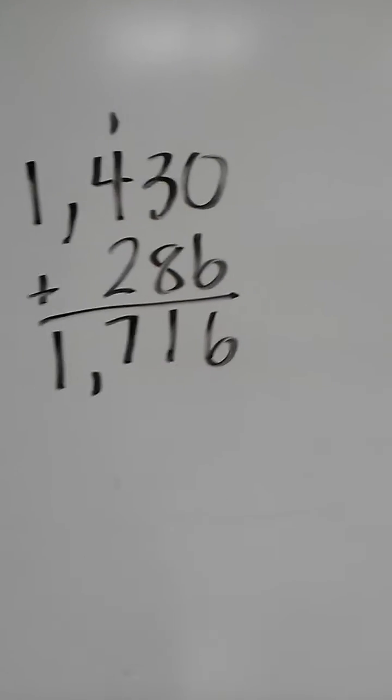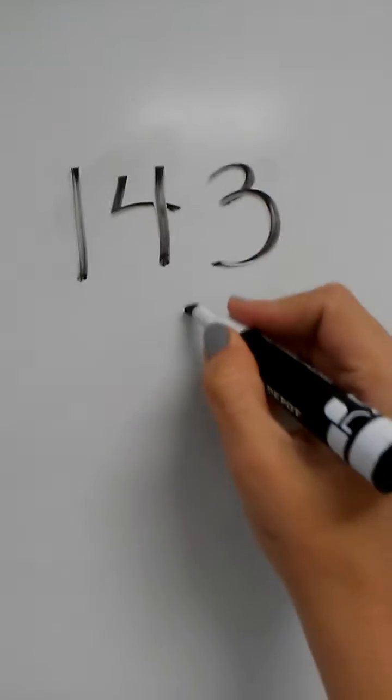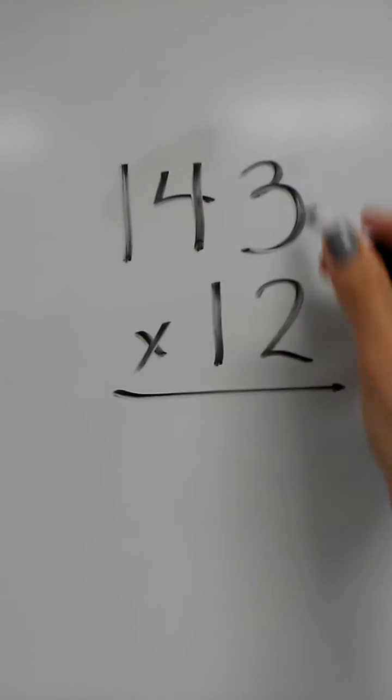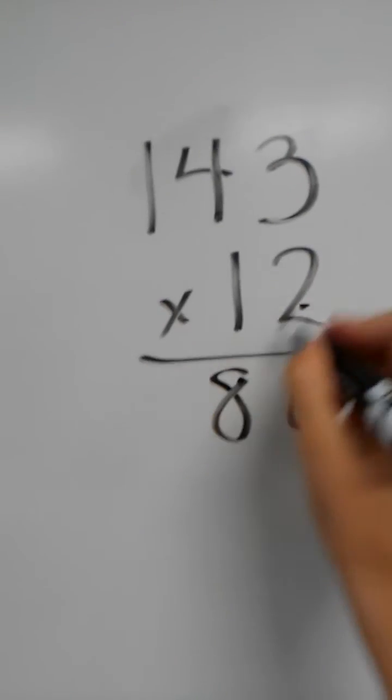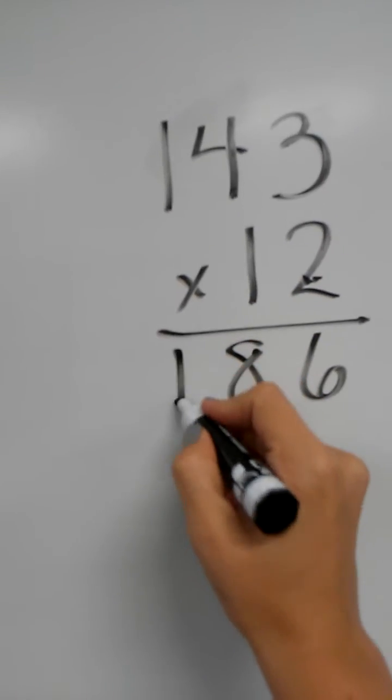Now for the traditional algorithm, 143 times 12. I'm multiplying 2 times 3, which is 6, 2 times 4 is 8, 2 times 1 is 2.